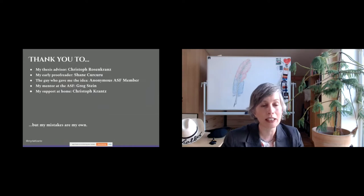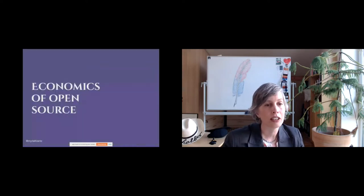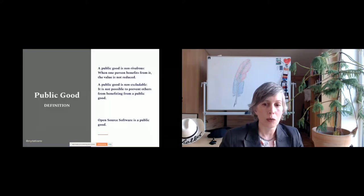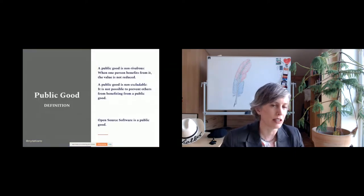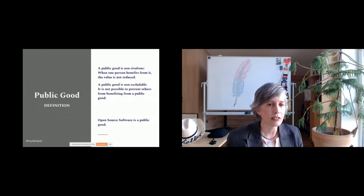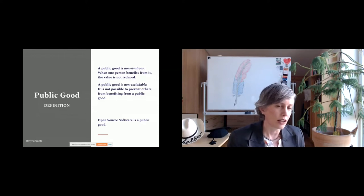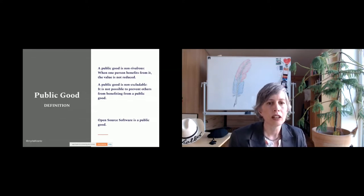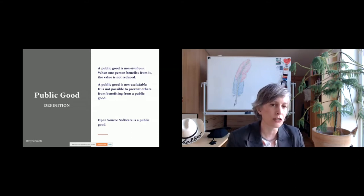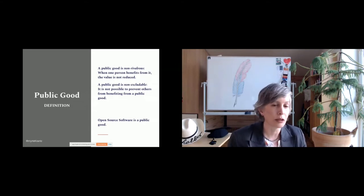Let's cover the economics of open source first. First off, what is a public good? A public good is non-rivalrous — non-rivalrous means that when one person benefits from it, the total value is not reduced. So software can be copied without reducing the initial value. A public good is also non-excludable: it's not possible to prevent others from benefiting from a public good. If it were excludable, then it would be a club good, like a membership or a golf club entrance.